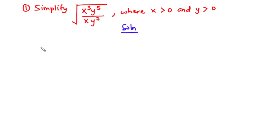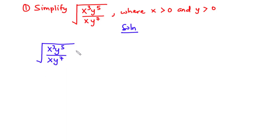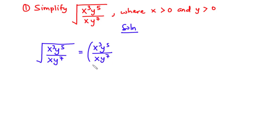This is a straightforward problem — let's solve it together. We have the square root of x exponent 3 times y exponent 5, divided by x times y exponent 7. According to indices, the square root of a value or variable is the same as having that variable raised to the exponent one-half. So we have x exponent 3 times y exponent 5, divided by x times y exponent 7, all raised to the exponent 1 over 2.